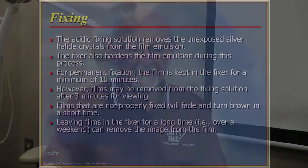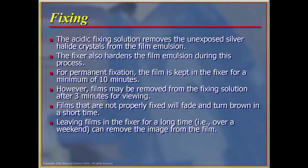Fixing is an acidic fixing solution that removes the unexposed silver halide crystals from the film emulsion. The fixer also hardens the emulsion during the process. For permanent fixation, the film is kept in the fixer for a minimum of 10 minutes. As I'm referring to now, this is strictly by-hand developing. Today, almost all offices still using film will have automatic processors.